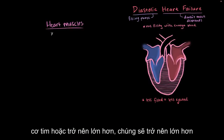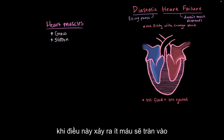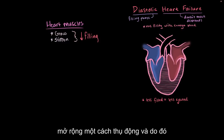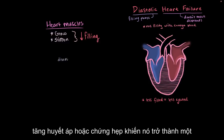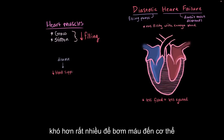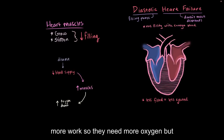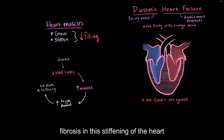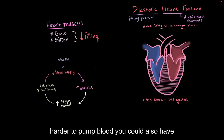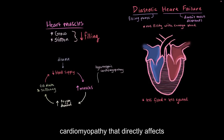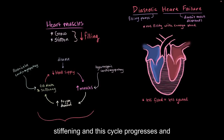So with diastolic heart failure, the heart muscles either get bigger, get stiffened, or both. When this happens, less blood fills into the ventricles and the heart can't passively expand or relax completely. This leads to a cycle of worsening heart failure: an underlying disease like hypertension or stenosis makes it harder to pump blood, so heart muscles increase in size. But bigger muscles need more oxygen, and with heart failure you can't supply more oxygen, leading to cell death, fibrosis, and stiffening of the heart muscle tissue. That feeds back into lower blood supply, making it even harder to pump. Other diseases like hypertrophic or restrictive cardiomyopathy can directly trigger muscle growth or stiffening, and the cycle progresses.